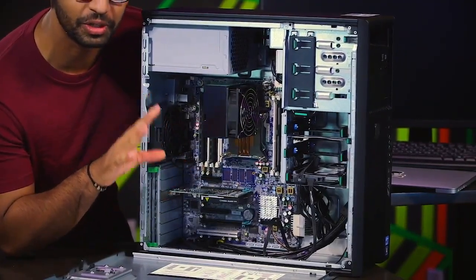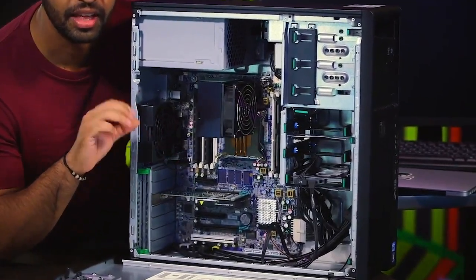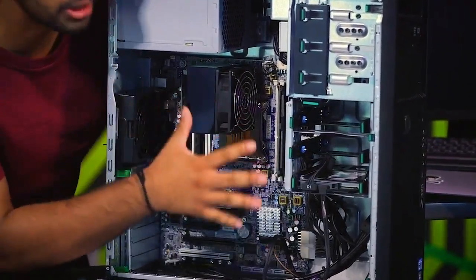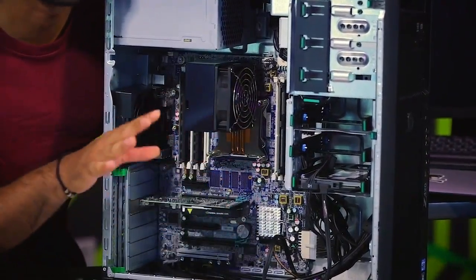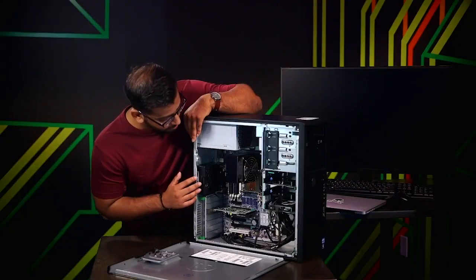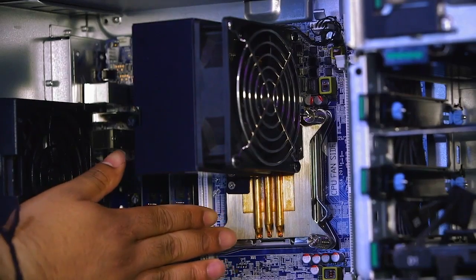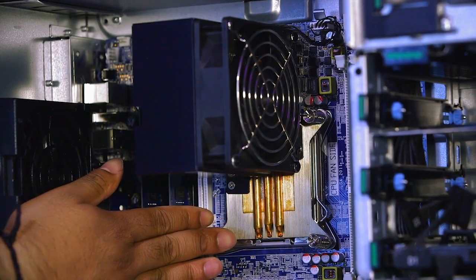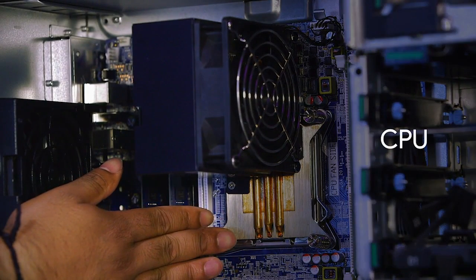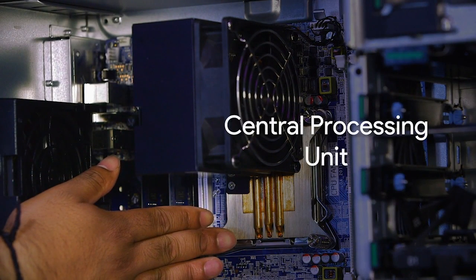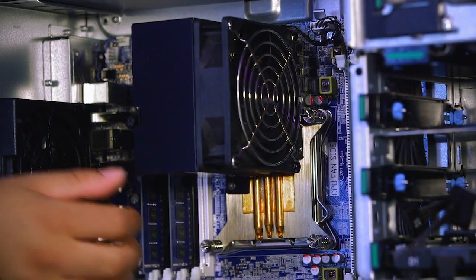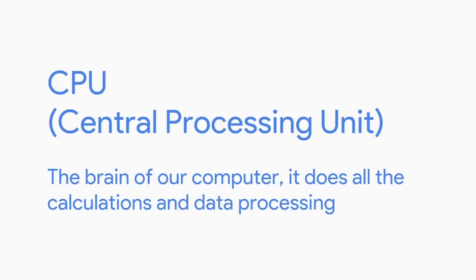Let's start with a quick tour, then we'll dive deeper into each of these parts in the next lesson. Right here, this component is a CPU, or Central Processing Unit, which is covered by this heatsink. You can think of the CPU as the brain of our computer.